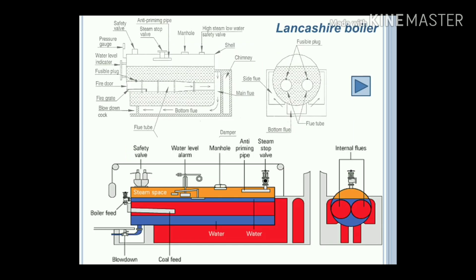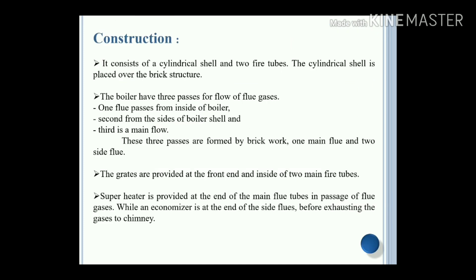The hot gases pass inside the tube, which is why it is called a fire tube boiler - surrounded by water. The construction consists of a cylindrical shell and two fire tubes. The cylindrical shell is placed over a brick structure.